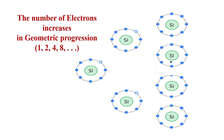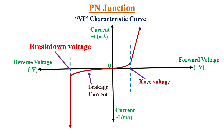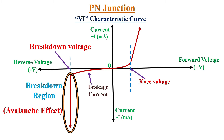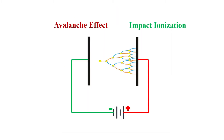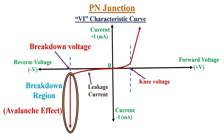This constant collision with atoms generates a large number of free electrons that produce a significant amount of reverse current in the diode. This process continues until the reverse current becomes large enough to destroy the diode. The voltage at which this occurs is known as the breakdown voltage and this effect is known as the avalanche effect. This avalanche breakdown effect is caused by impact ionization — highly accelerated free electrons collide with other atoms and dislodge their bound valence electrons, creating a large reverse current.